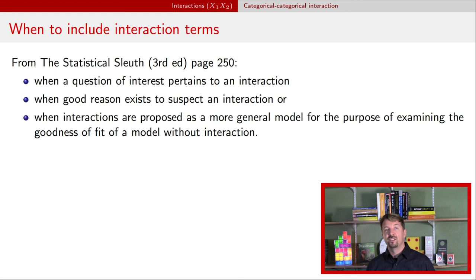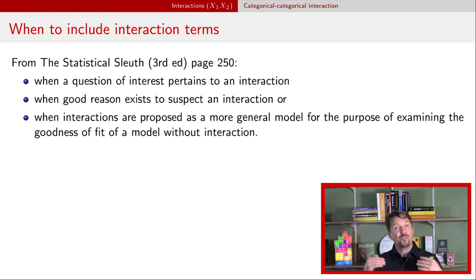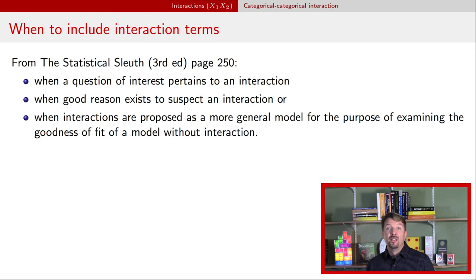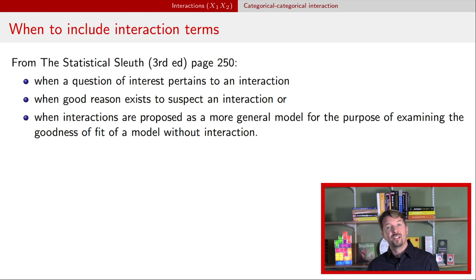When should you include an interaction? First, include one when your scientific question requires it — for example, if you're asking whether the effect of X depends on the level of Z. Second, include one if there's good reason to suspect an interaction exists, such as previous research demonstrating it. Third, you might add an interaction to assess the goodness of fit of your current model, to see whether a more complex model is necessary.